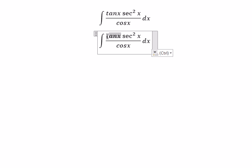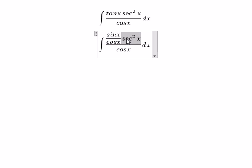About tan x, we can write it as sine x over cosine x. Secant of x square, we can write as 1 over cosine x square.